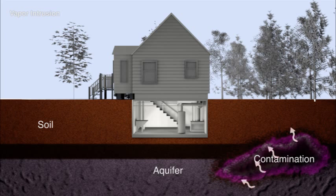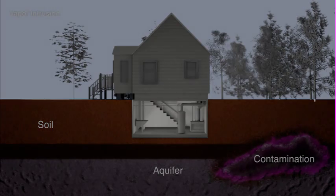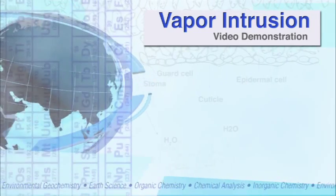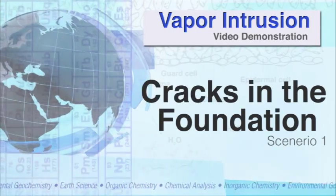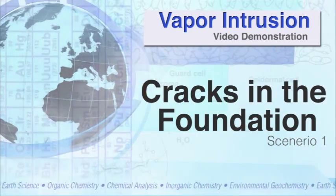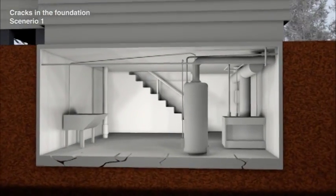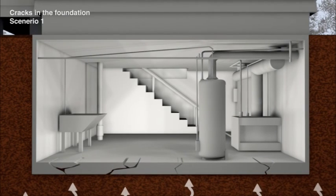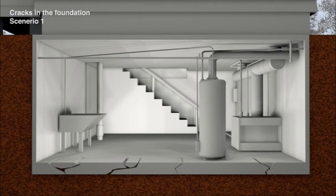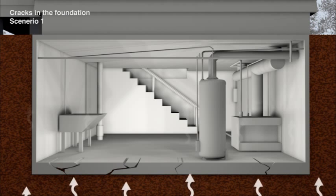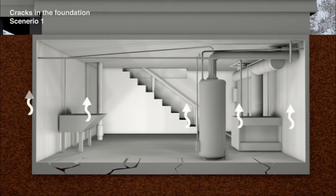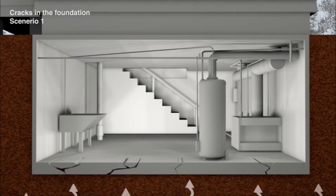We'll look at two of the possible ways this can happen. The first way contaminant vapors that are migrating underground can enter a building is via cracks in the foundation. In this case, the building foundation can't act as an effective barrier to soil vapors.